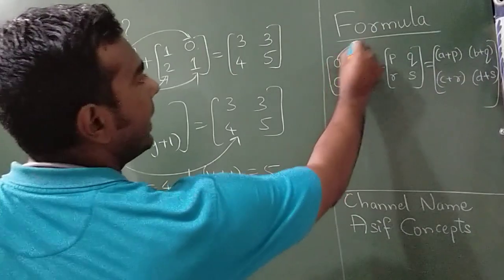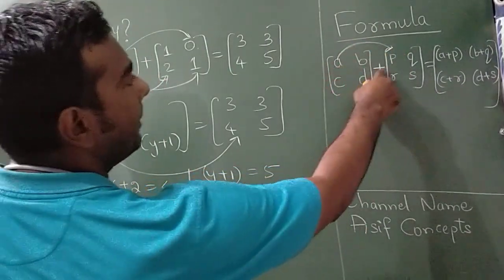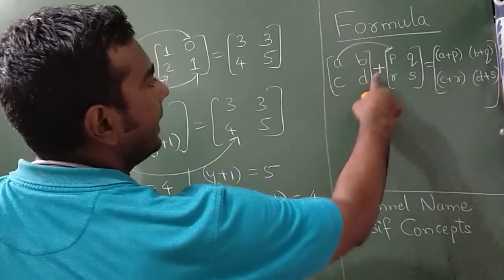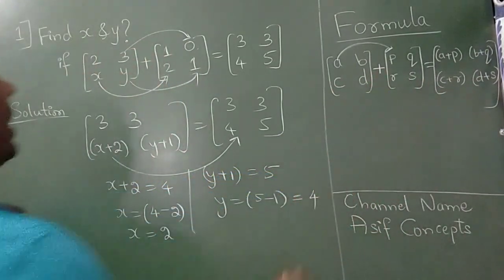The formula is you have to add corresponding elements. A plus P, B plus Q, C plus R and D plus S. Applying here.